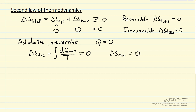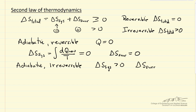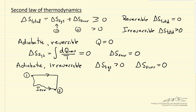If instead we look at an adiabatic irreversible process, delta S of the system must be greater than zero because delta S of the surroundings is still zero — there's no heat transfer — but the system is irreversible. To calculate the entropy change for the system, we'd have to pick a reversible pathway. If we're going from state one to state two by some irreversible pathway, we pick a reversible pathway and calculate the heat transfer for that reversible process to get the entropy change, since entropy is a state function. So we can pick a pathway to make the calculation easy.